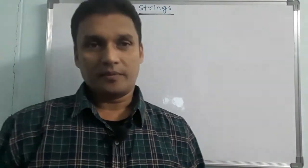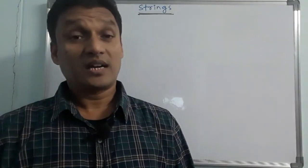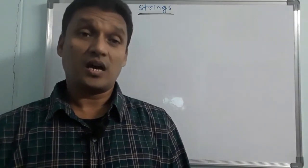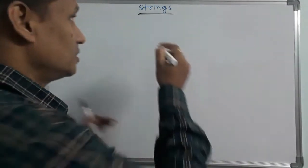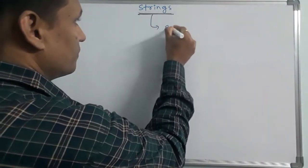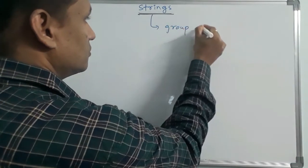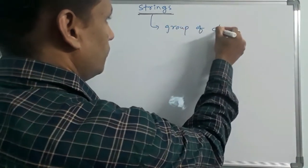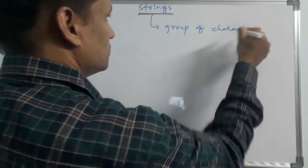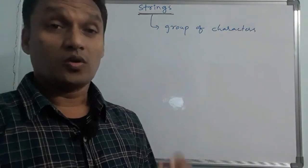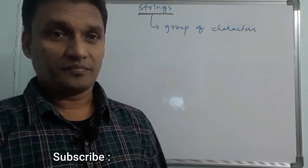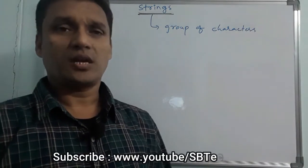What is meant by string? String is nothing but a collection of characters or group of characters. A group of characters is nothing but a string, or collection of characters.